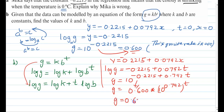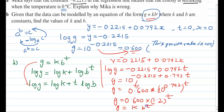So g = 0.600 × 1.2^t. Comparing this with g = kb^t, we get k = 0.600 and b = 1.2.